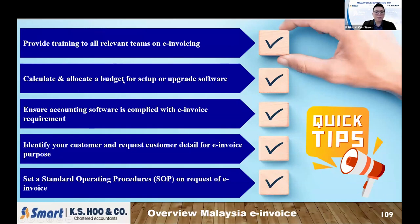The next step is to calculate and allocate the budget to set up and buy the software. To issue e-invoices, you may need to use API software and pay some extra costs. Calculate what is needed to operate the system, and make sure your accounting software is compliant with the e-invoice requirements.